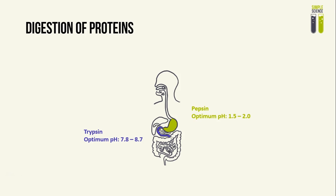Pepsin has an optimum pH of 1.5 to 2, and this is because it is secreted in the stomach — in the gastric juices, which are acidic — therefore the optimum pH has to adapt so that the enzyme can work very well in the stomach. After that, we have trypsin, which is secreted in the duodenum, which is the first part of the small intestine. Its optimum pH is 7.8 to 8.7. In the exam, if the enzyme specified is secreted in the stomach, you would choose the pH that is the most acidic, and if it is secreted anywhere else, you would often choose the pH that is more neutral.